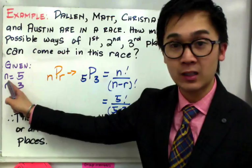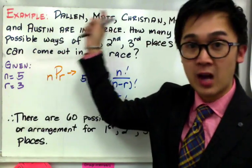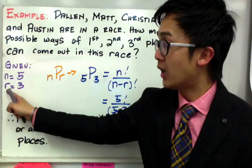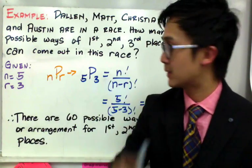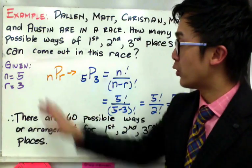So our n here is equal to 5 because there are 5 people in this race. And there are r equal to 3 because we are trying to arrange it in 3 places. Now, to use your formula,